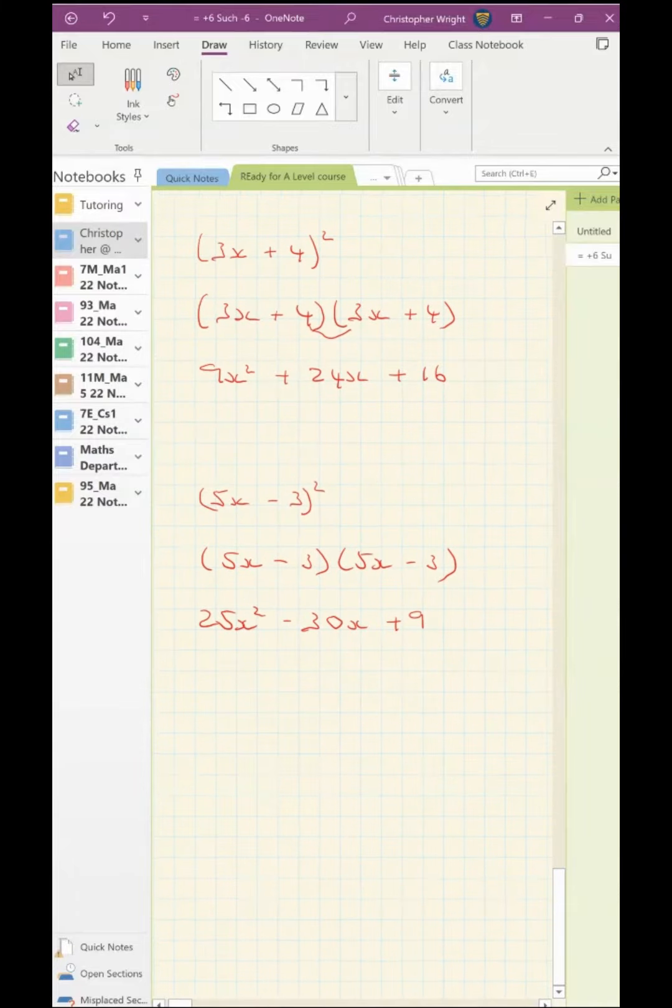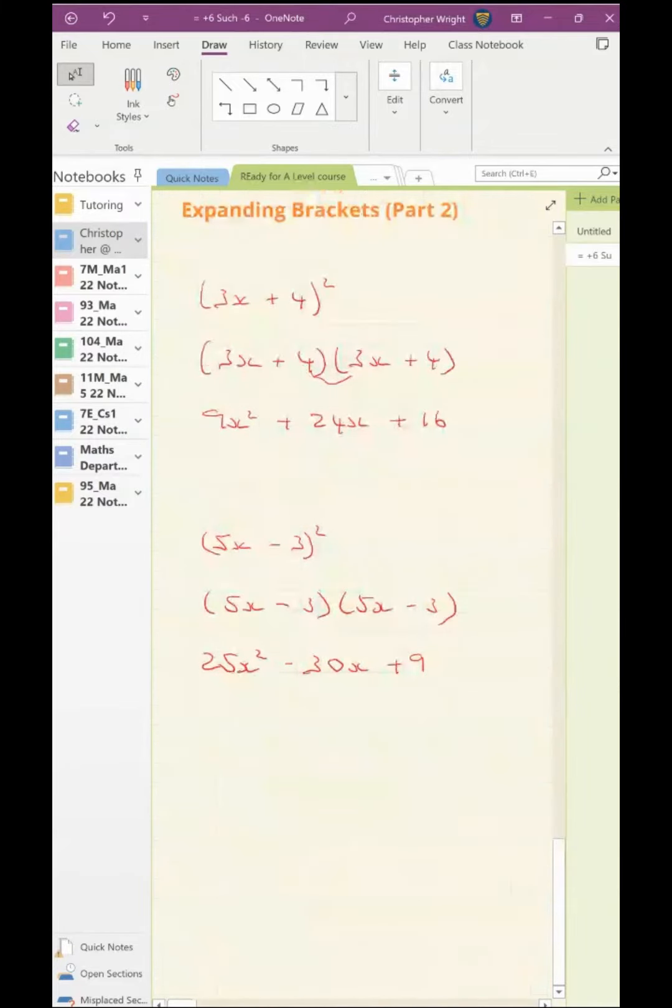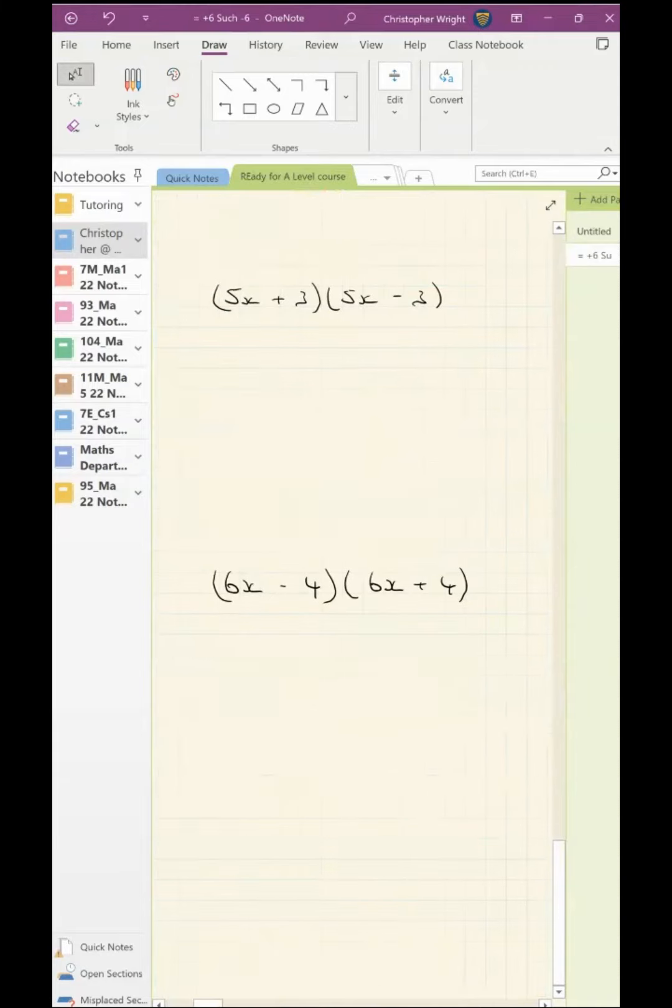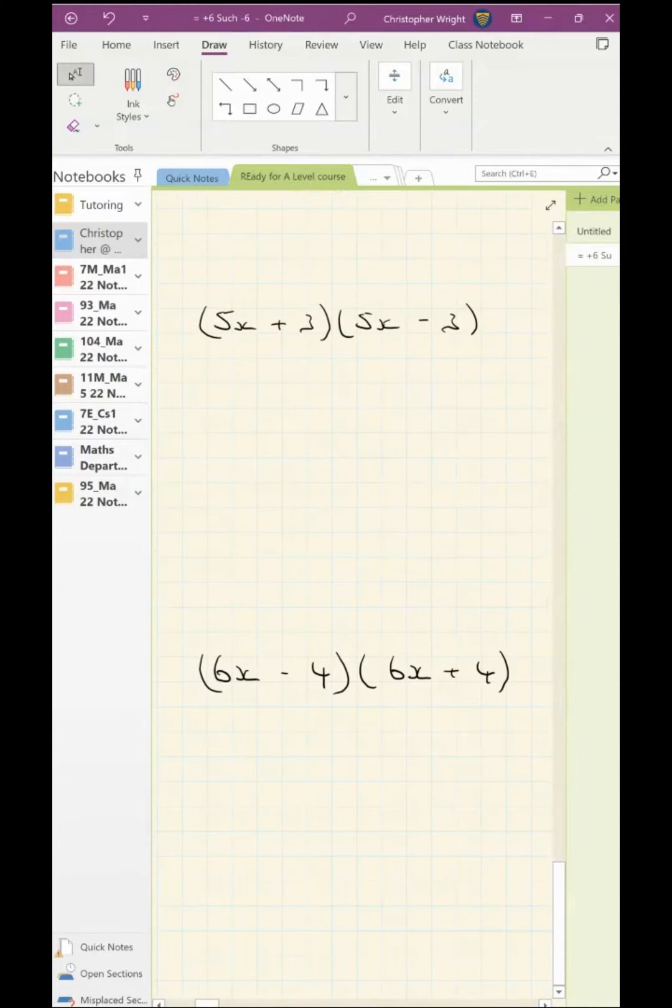So that's the first of our special cases. Okay, and the second special case is something that looks like this: 5x plus 3, times 5x minus 3. So I hope you know already what's going to happen here.